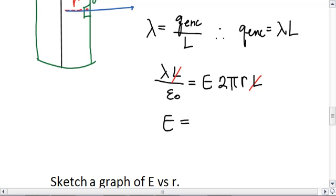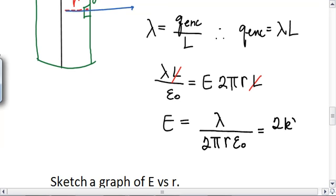Okay, so then our electric field should be lambda over 2 pi r epsilon naught, or 2 k lambda over r, right? That would be just fine.